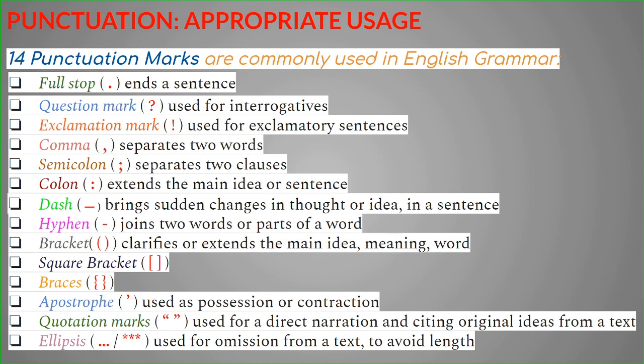Apart from the same functions: Apostrophe — used for possession or contraction. Quotation marks — used for direct narration and citing original ideas from a text. And finally, ellipses — three dots or three stars, also called asterisks — used for omission from a text to avoid the full length of a poem or sentence.